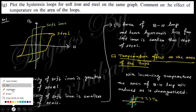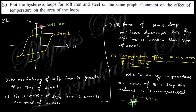The next question asks to plot the hysteresis loop for soft iron and steel. The green curve is for soft iron and the yellow curve is for steel. The retentivity of soft iron is greater, whereas the coercivity is smaller, and the area of the BH loop for soft iron is smaller than that of steel. If you increase the temperature, the area of the BH loop will be reduced because magnetization decreases with increasing temperature — thermal agitation of dipoles reduces the net dipole moment, decreasing retentivity and hence the hysteresis loss.